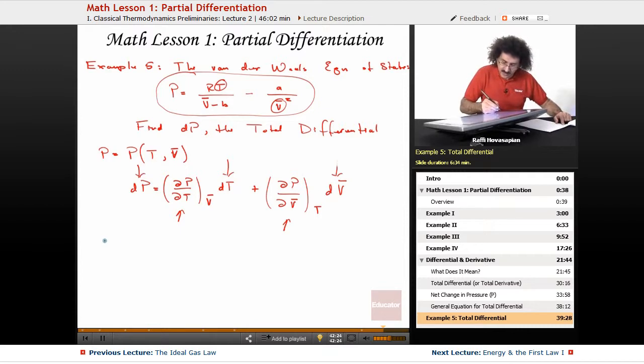Well, let's see, ∂P, when I go ahead and differentiate this holding V constant, so V doesn't matter, I end up with the following, I end up with R, again, with respect to T, so it ends up being R over V minus B, that's ∂P/∂T, that's that one.